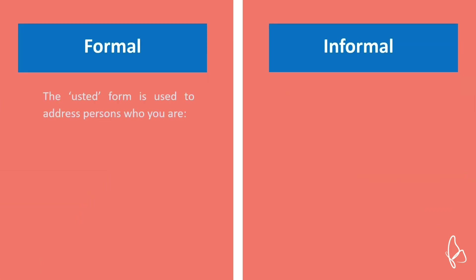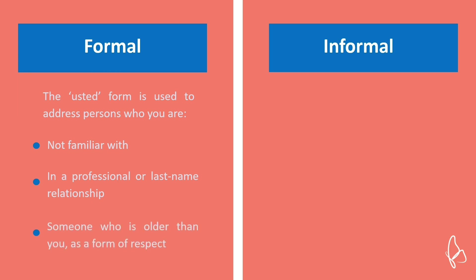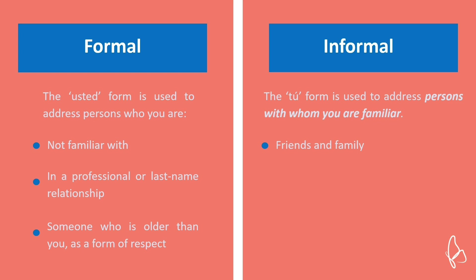About the two ways to address someone: the formal way, also called the usted form, is used to address persons who you are not familiar with, persons who you are in a professional or last-name relationship with, or someone who is older than you as a form of respect. The informal way, also called the tú form, is used with persons with whom you are familiar — so for example, friends and family — and also with peers, such as classmates at school or colleagues at work depending on your relationship.